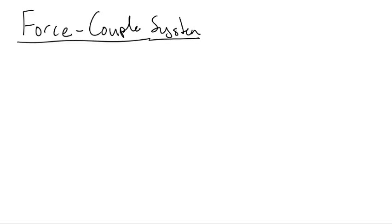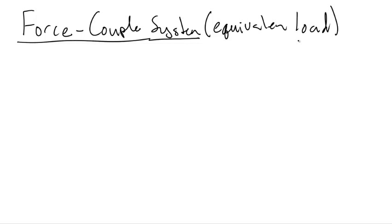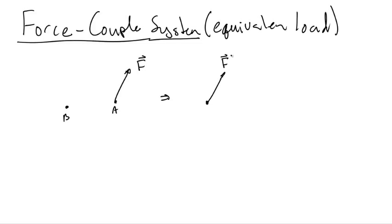In this video I would like to clear up any misconceptions about force couples. A force couple system is an equivalent load. What I mean by this is if you have a force offset from a point, you can represent this force equivalently by moving it to point B — the same force that was at A is now at B.